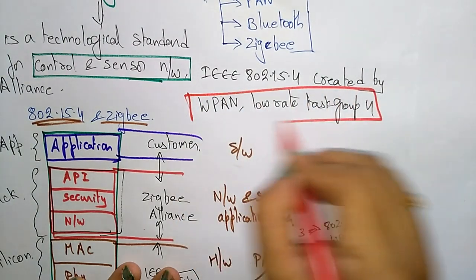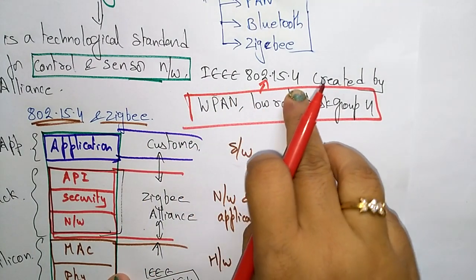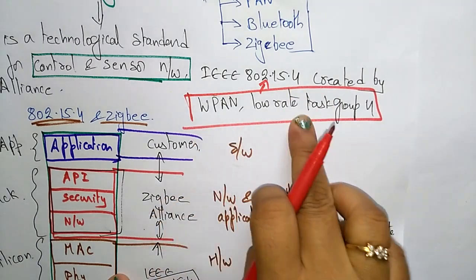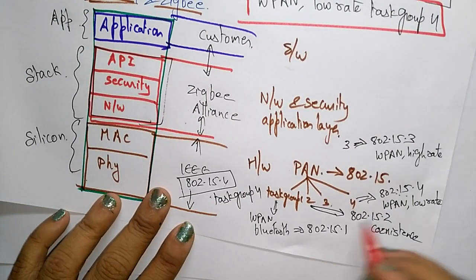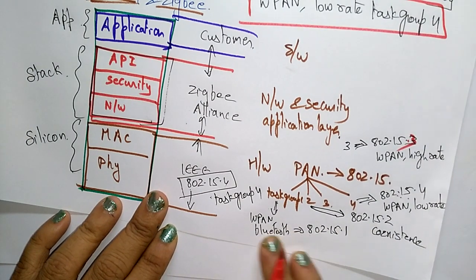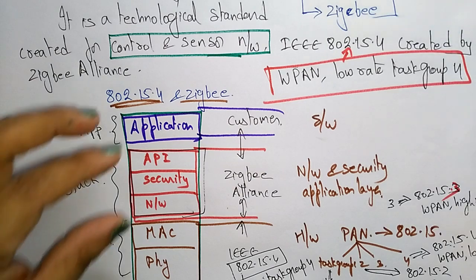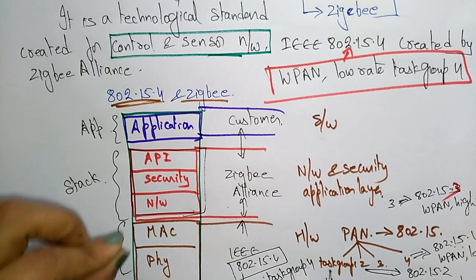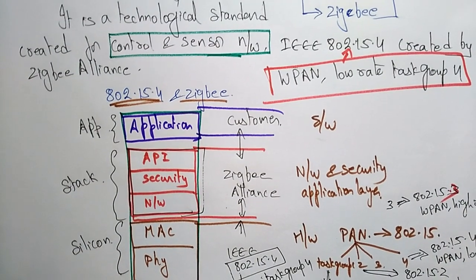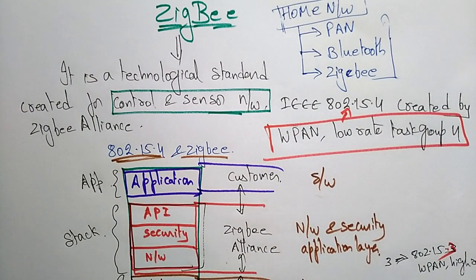Zigbee is a standard of IEEE 802.15.4 — the .4 indicates it is a wireless PAN low-rate task group four. So .3 indicates wireless PAN high rate, .2 indicates coexistence, and .1 indicates wireless PAN Bluetooth. This is the Zigbee and IEEE 802.15.4 layered architecture — application layer, security, network, MAC, and physical layer. In the next video I will explain how Zigbee works with an example.